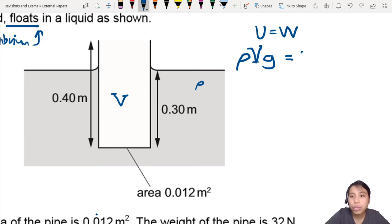Okay, so W is 32. Now we don't really know the volume of the whole thing, so how can we do this? We want to say volume is cross-sectional area times height. Okay, so we can say this is Ahg.